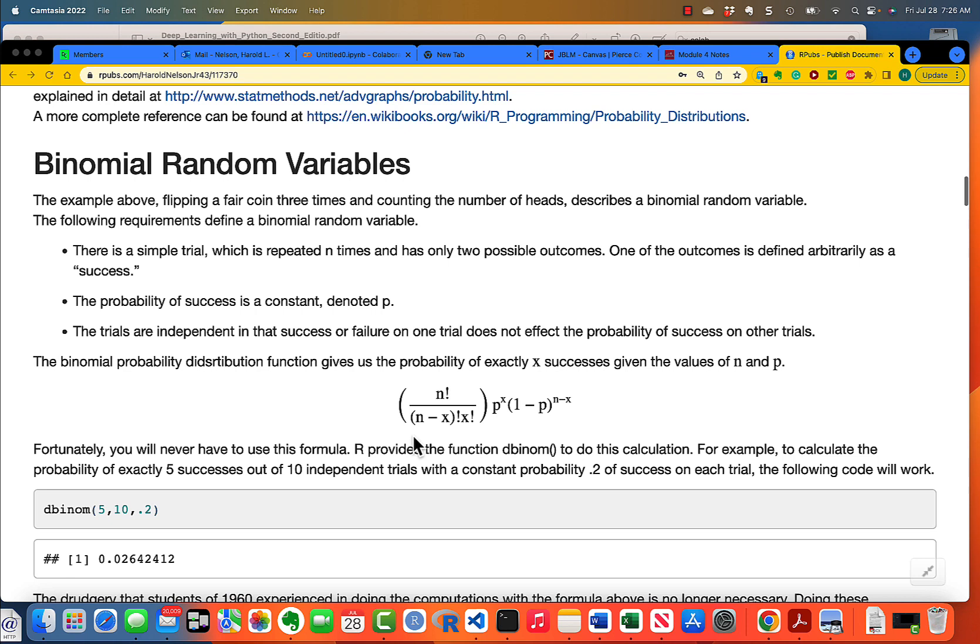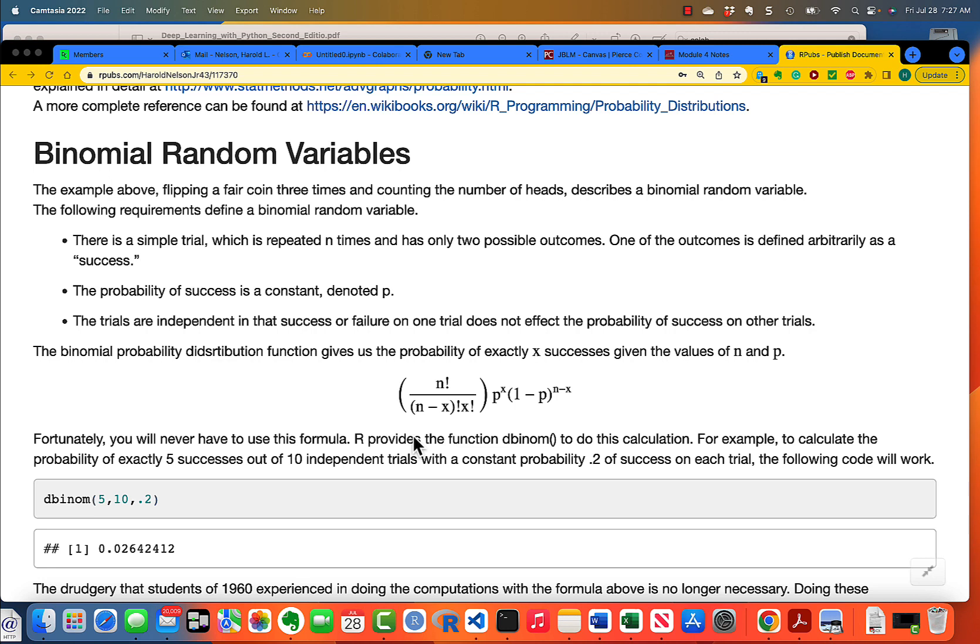So, let's look at a very specific type of binomial random variable. Here are the requirements. A simple trial, repeated N times, and has only two possible outcomes. One of the outcomes is defined arbitrarily as a success. Success doesn't mean good. It simply means that this is what you're counting. And the probability of success is a constant, denoted P. The trials are independent, and the success or failure on one trial does not affect the probability of success on other trials.